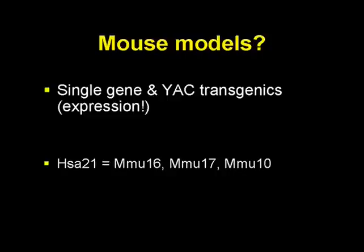People started thinking about mouse models, and much of this work has been done at Johns Hopkins particularly, where Roger Reeves has been a star. For those familiar with genetics, there have been many mouse models where people have put in abnormal doses of single individual genes — there are problems with that because the dose itself is important. Another problem is that although mice, cows, yaks, elephants, fish, and ants contain pretty much the same genes as we do, our chromosomes are not the same — they're all scrambled up.